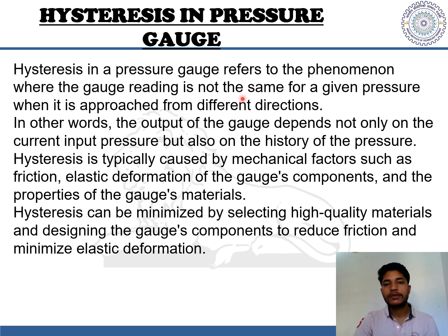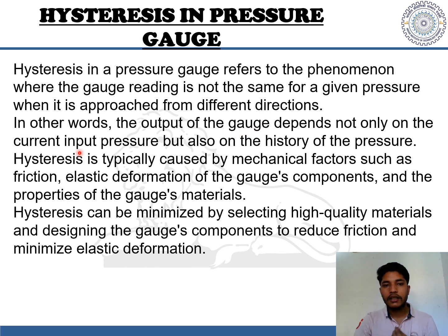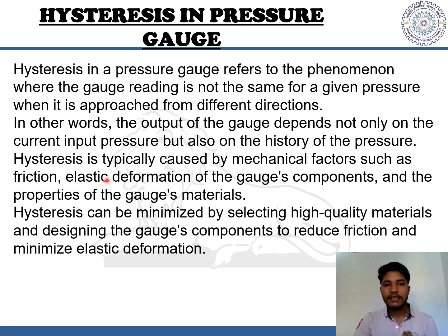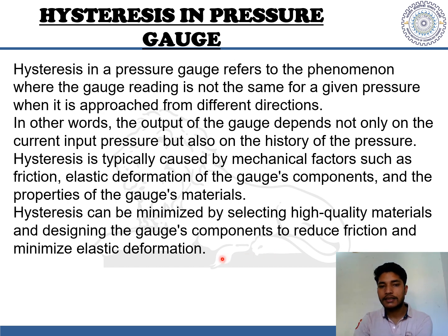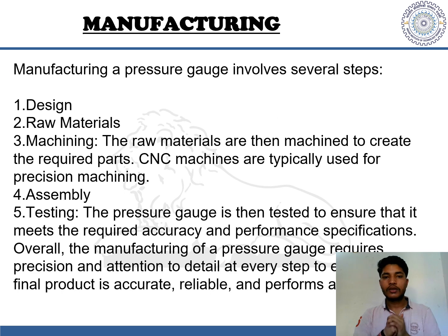Now let's look at hysteresis. Hysteresis in a pressure gauge refers to the phenomenon where the gauge reading is not the same for a given pressure when it is approached from different directions. In other words, the output depends not only on the current input pressure but also on the history of the pressure. Hysteresis is typically caused by mechanical factors such as friction, elastic deformation of gauge components, and the properties of the gauge's materials. It can be minimized by selecting high-quality materials and designing components to reduce friction and elastic deformation.